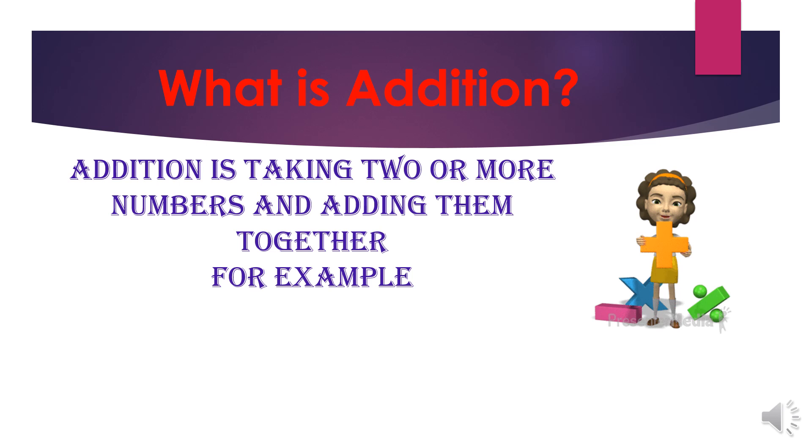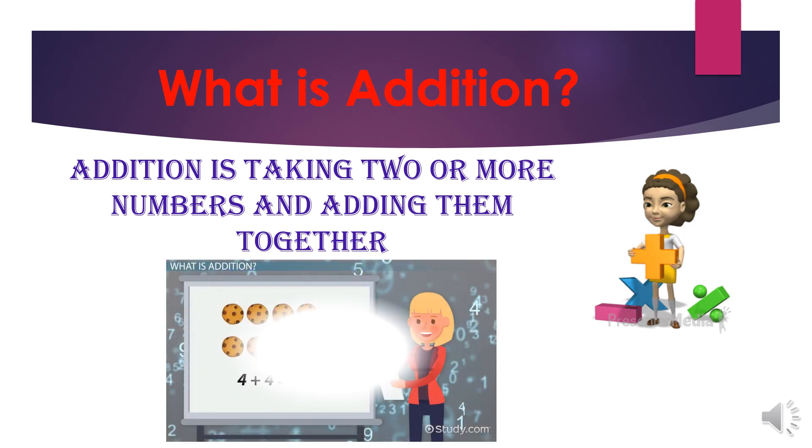Addition is taking two or more numbers and adding them together. For example, here we have four cookies in one row plus four cookies in the second row. Let's add them together. One, two, three, four, five, six, seven, eight. So four plus four equals eight.